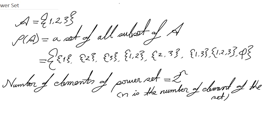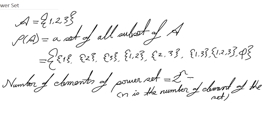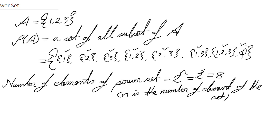In our case we have 1, 2, and 3 as elements in A, meaning n equals 3. So the number of elements is 2 to the power 3, which equals 8. Let's count: one, two, three, four, five, six, seven, and eight. Yes, in our power set we got eight elements.